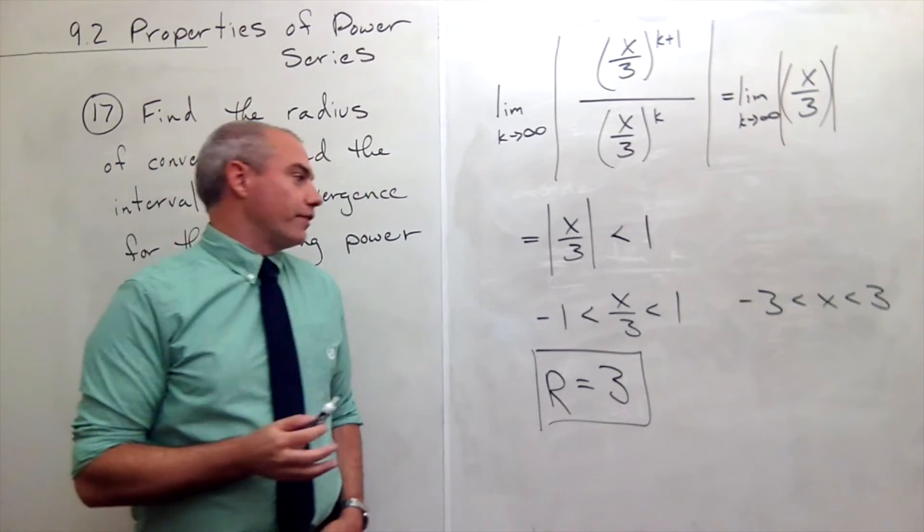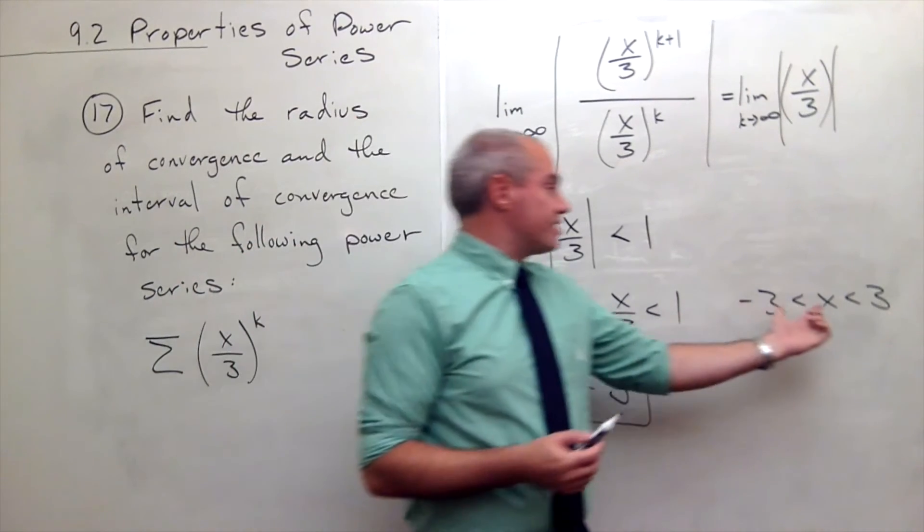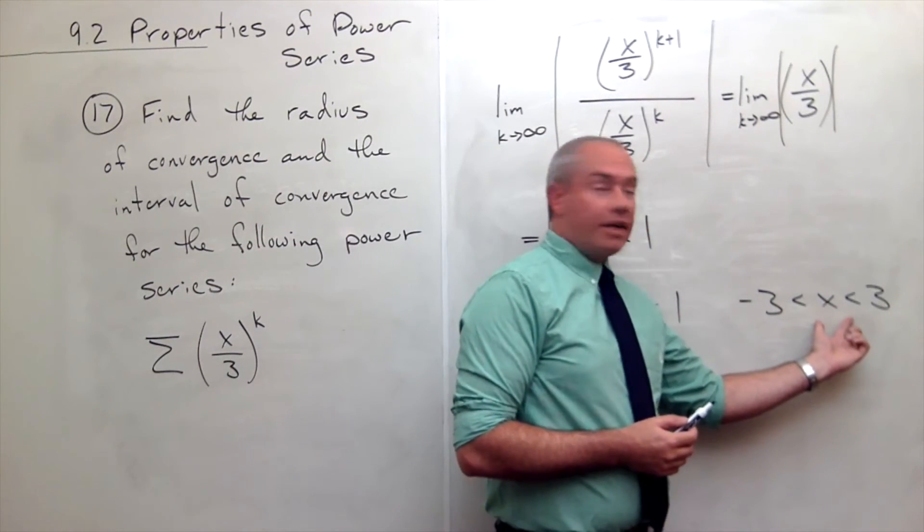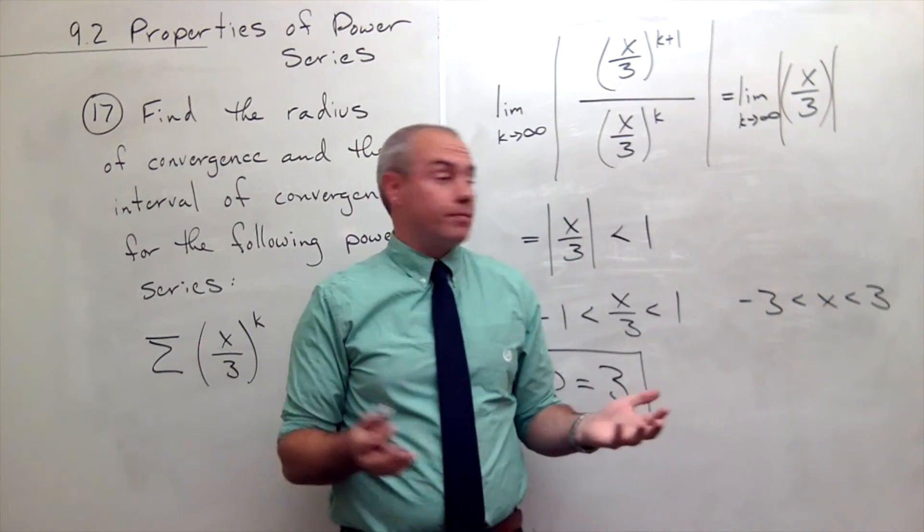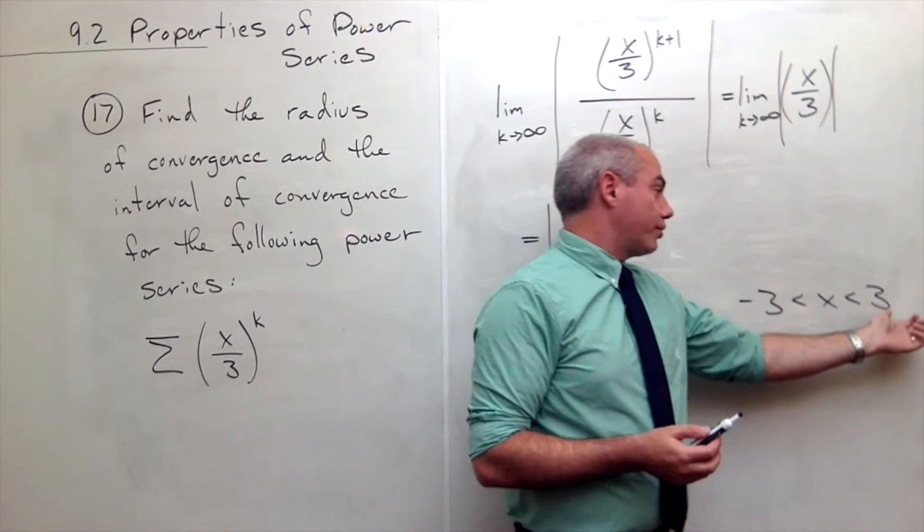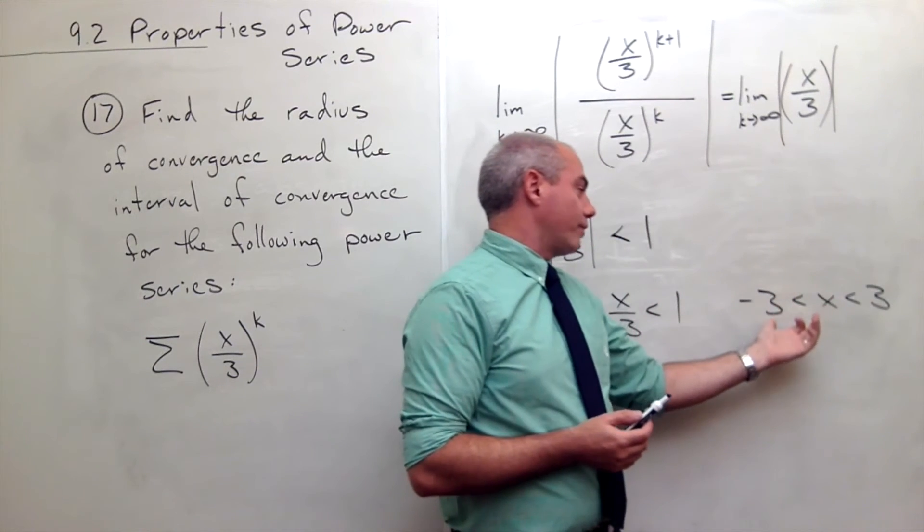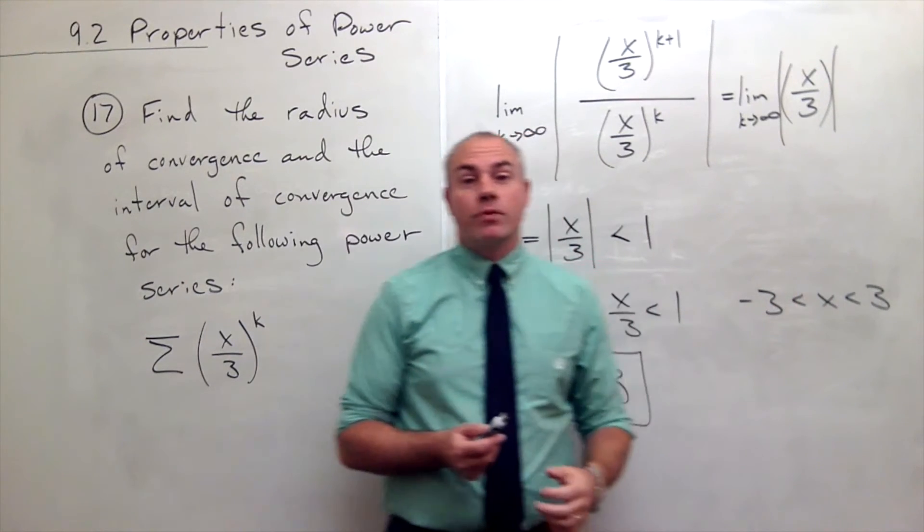So I've got my radius of convergence, now I need my interval of convergence, and we're pretty close. This is almost my interval of convergence. The only difference is, well, possibly it converges at 3, and possibly it converges at -3. So we need to check it out.